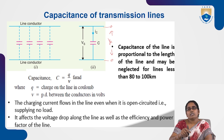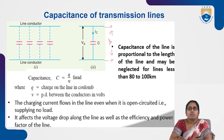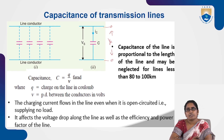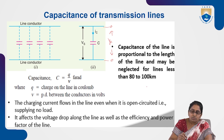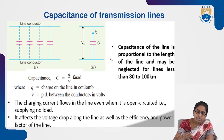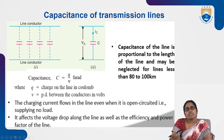Note that capacitance of the line is proportional to the length of the line. It may be neglected for a line length of 80 to 100 kilometers — the capacitance effect is not considered for transmission line lengths up to 100 kilometers. This is how capacitance is present in the transmission line and how it affects transmission line performance.